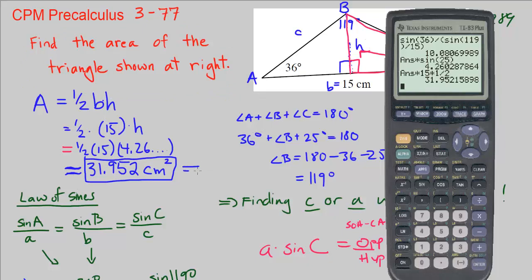Do not round it to 32. This is not 32 centimeters squared. We want to get more precision than just rounding it to the whole number. So again, 31.952 centimeters squared, and that ends for us CPM Precalculus Chapter 3, number 77.